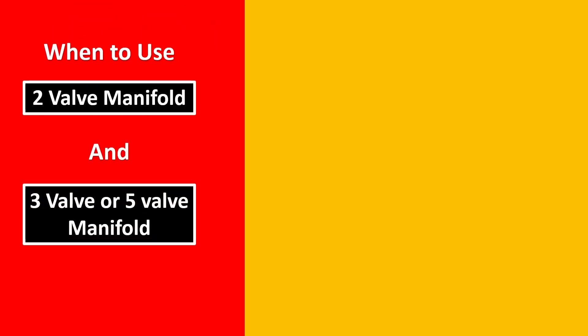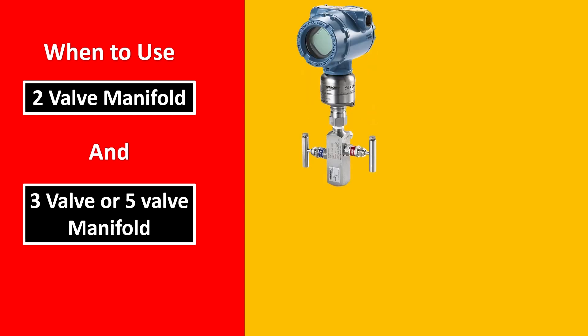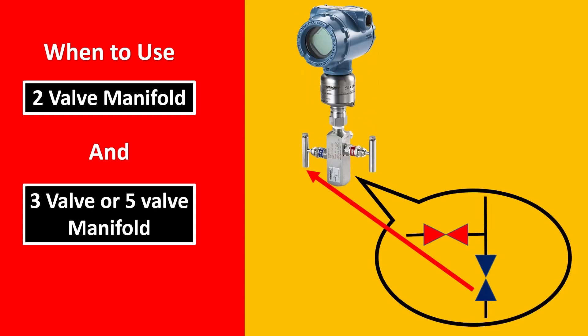Now the next thing is when to use 2 valve manifold, 3 valve manifold and 5 valve manifold. So remember that for a transmitter, 2 valve manifold is very simple. You have 2 valves to it. One is going to be your isolation valve. The other is going to be your vent and drain valve. This is how it looks in the real world. And this is the diagrammatic representation that you can draw.